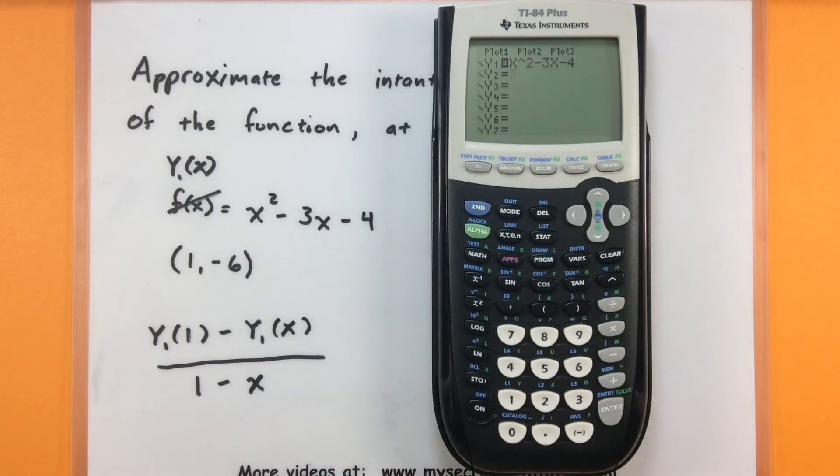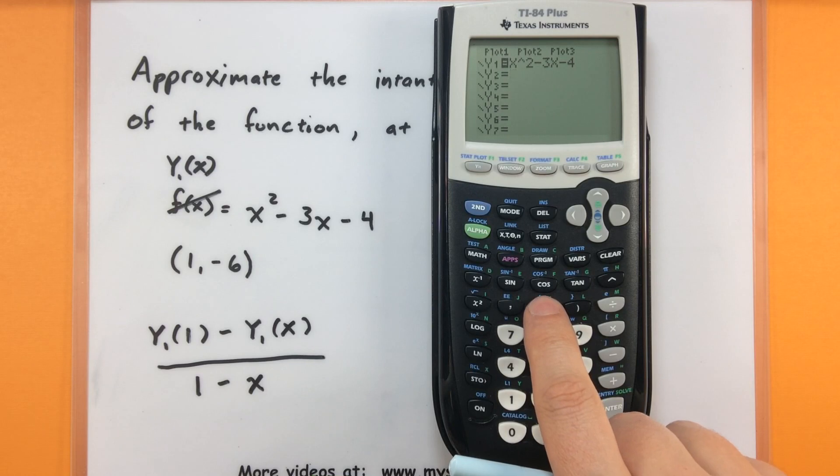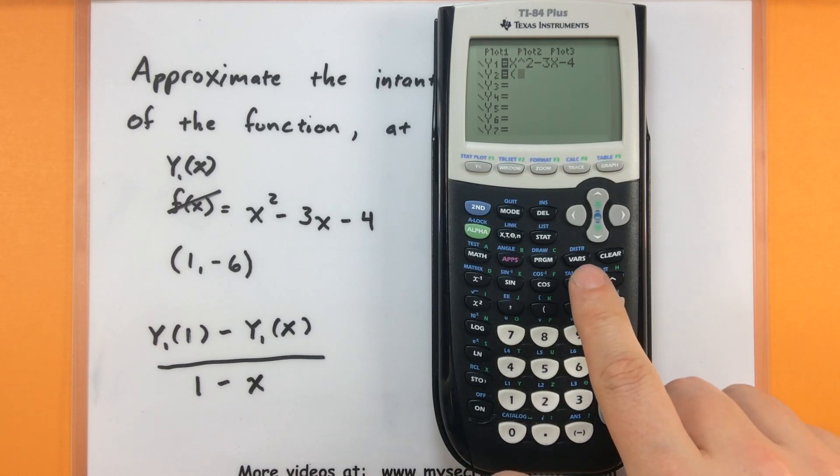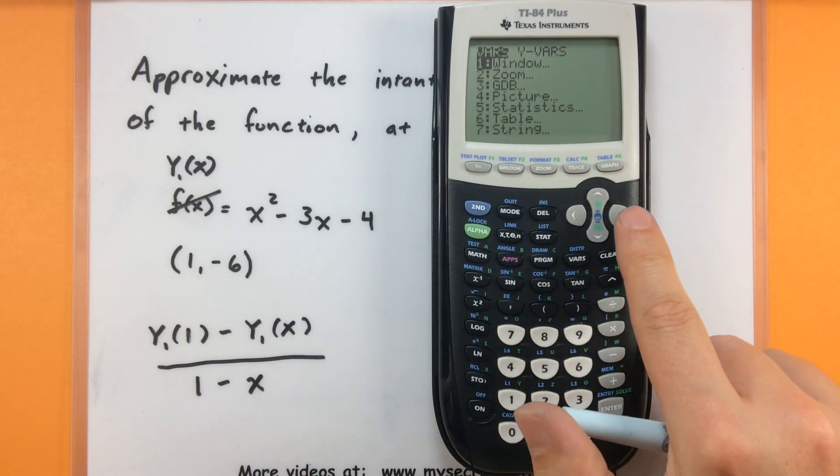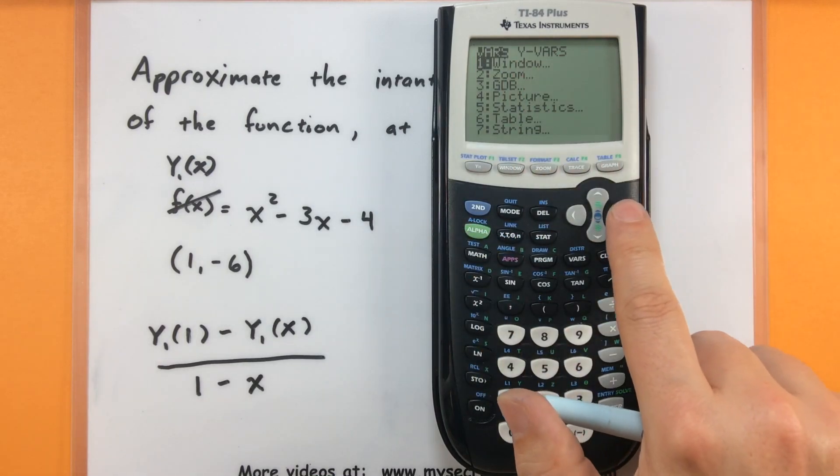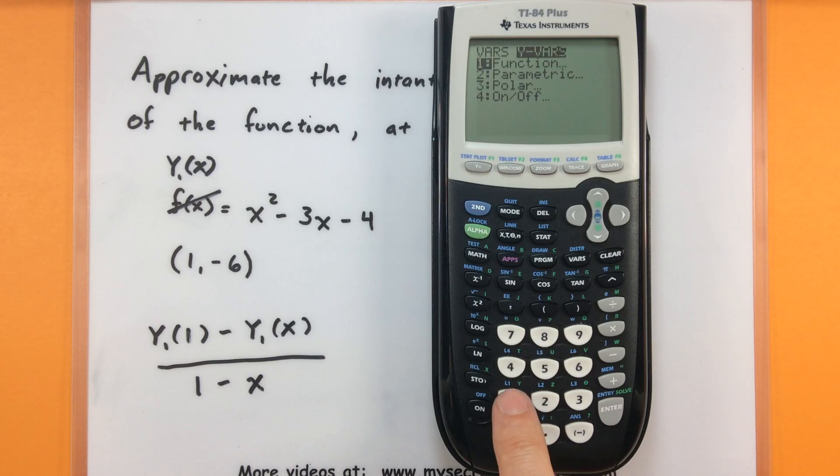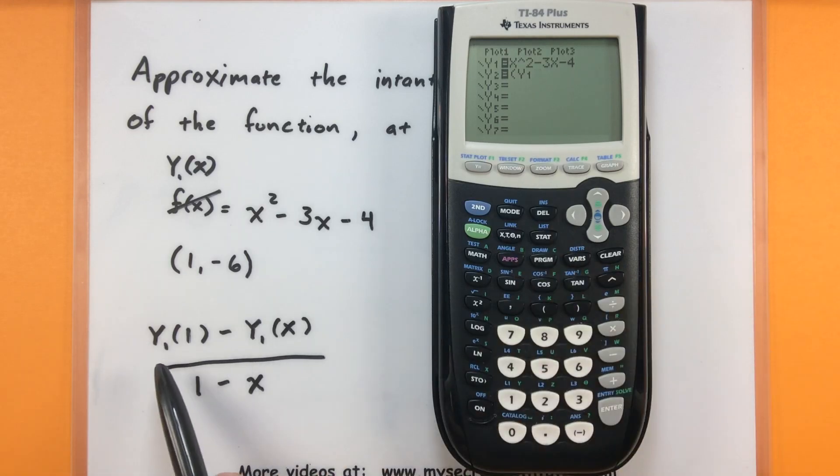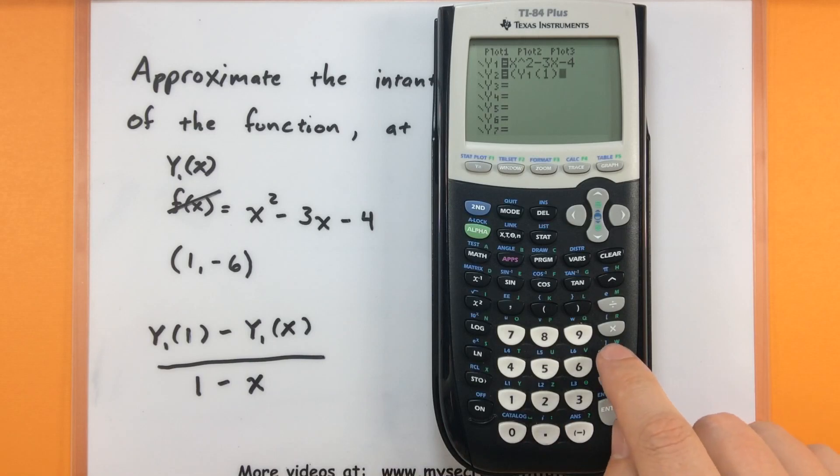So this slope formula is what now I want to program into the calculator. And we'll go ahead and put that under y2. To start this off I'll go ahead and use a pair of parentheses. And then we need to put in y1 of one. To do that you'll go to vars. Arrow over until we get to the y variables. Make sure the first one is selected function. And select y1. So you can see now that I have parentheses y1, we'll open up another set of parentheses and put a one on the inside there. So what I'm telling the calculator literally is to take one and plug it into my function. Now let's go ahead and repeat that process. Minus.